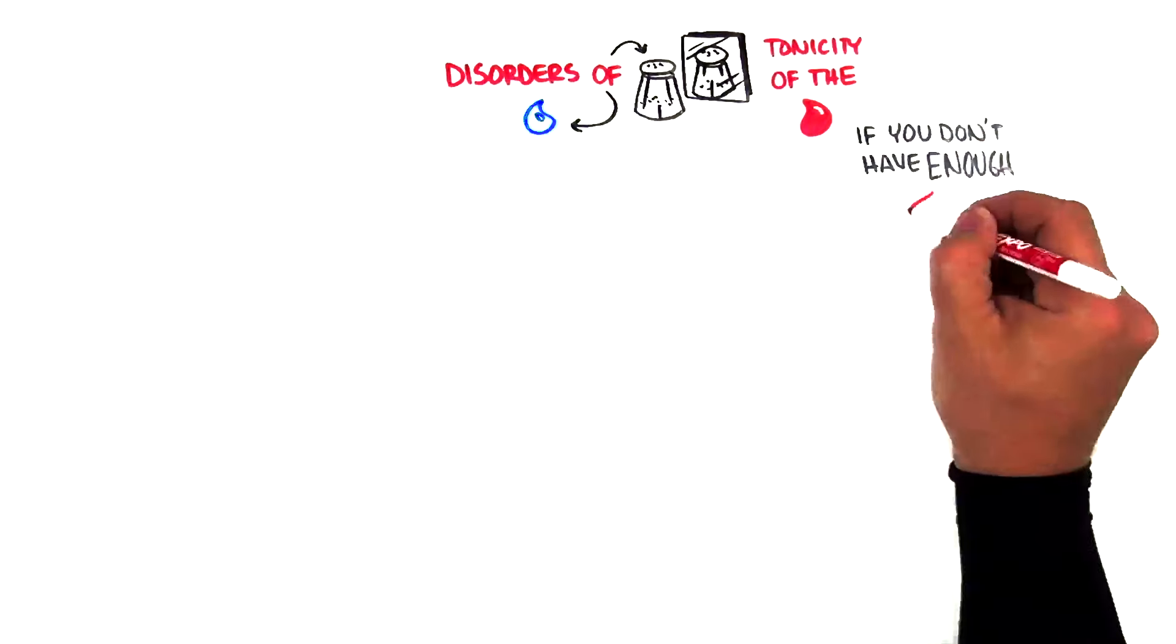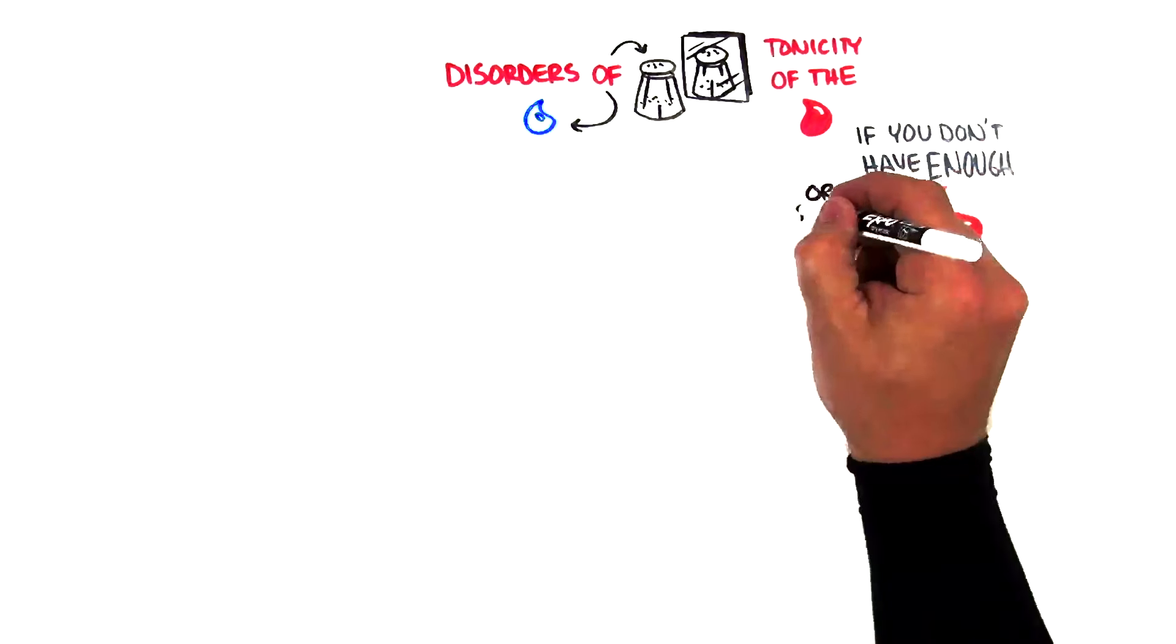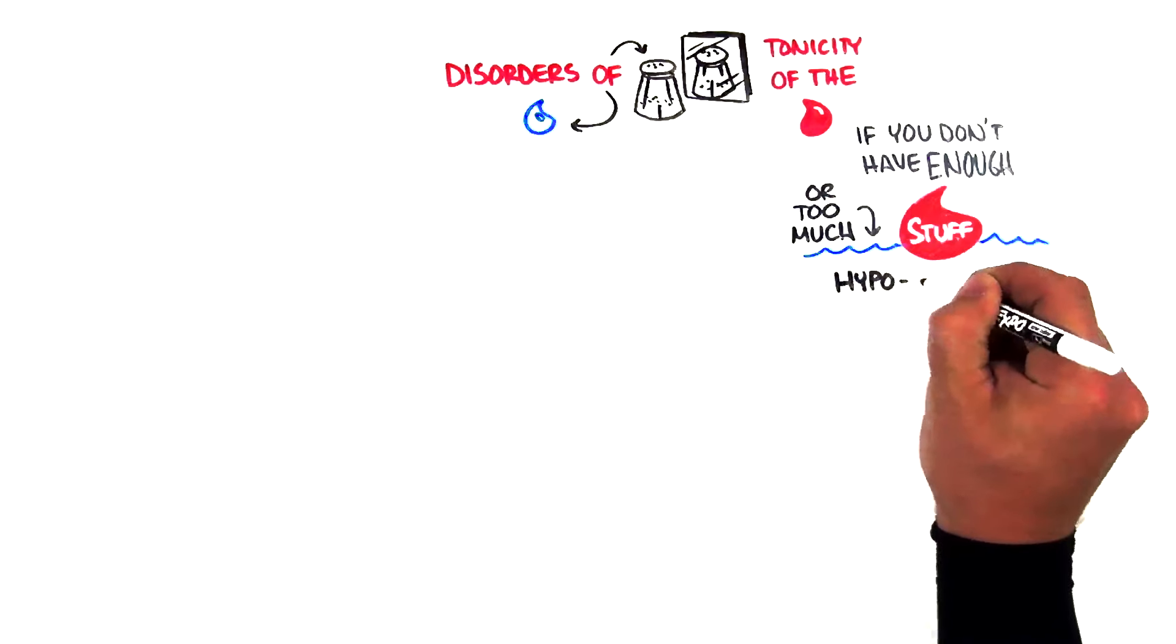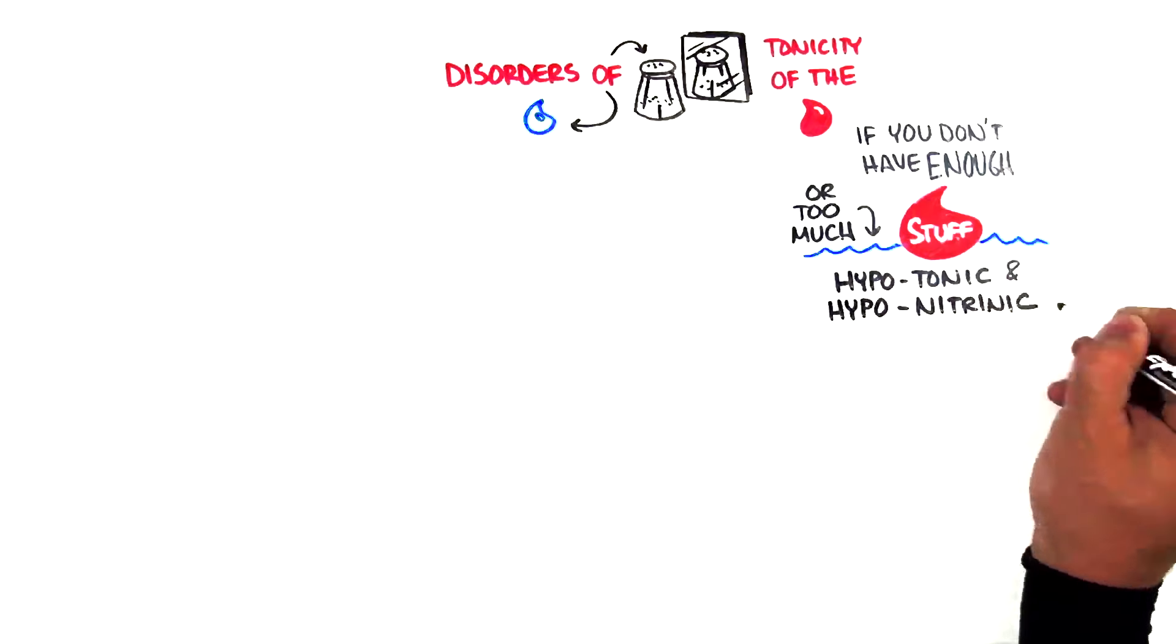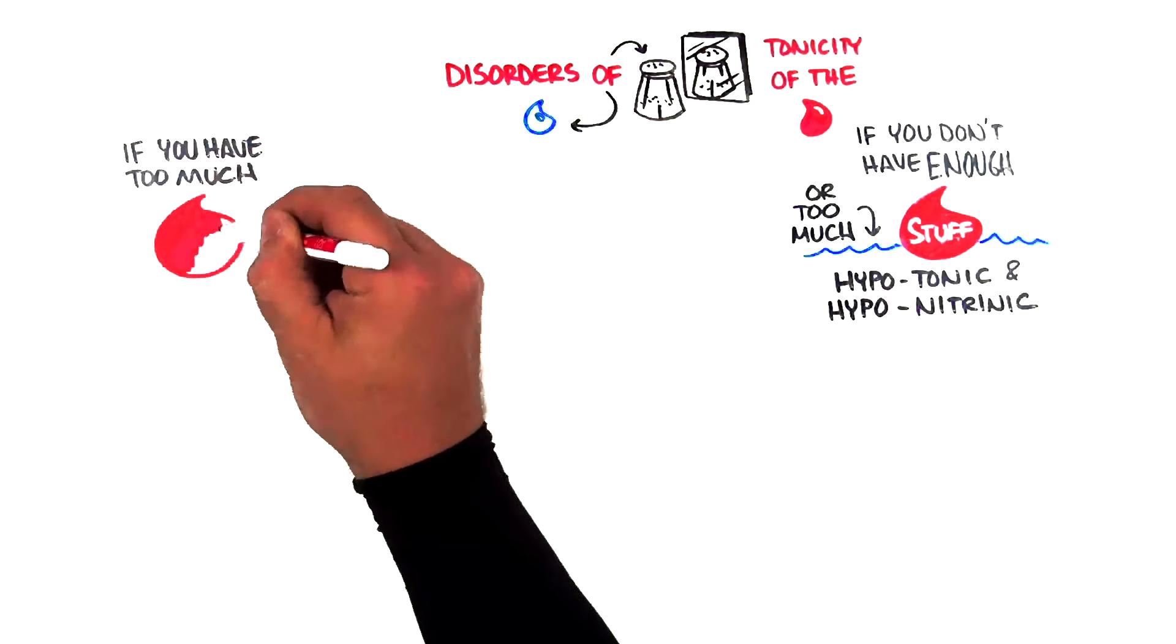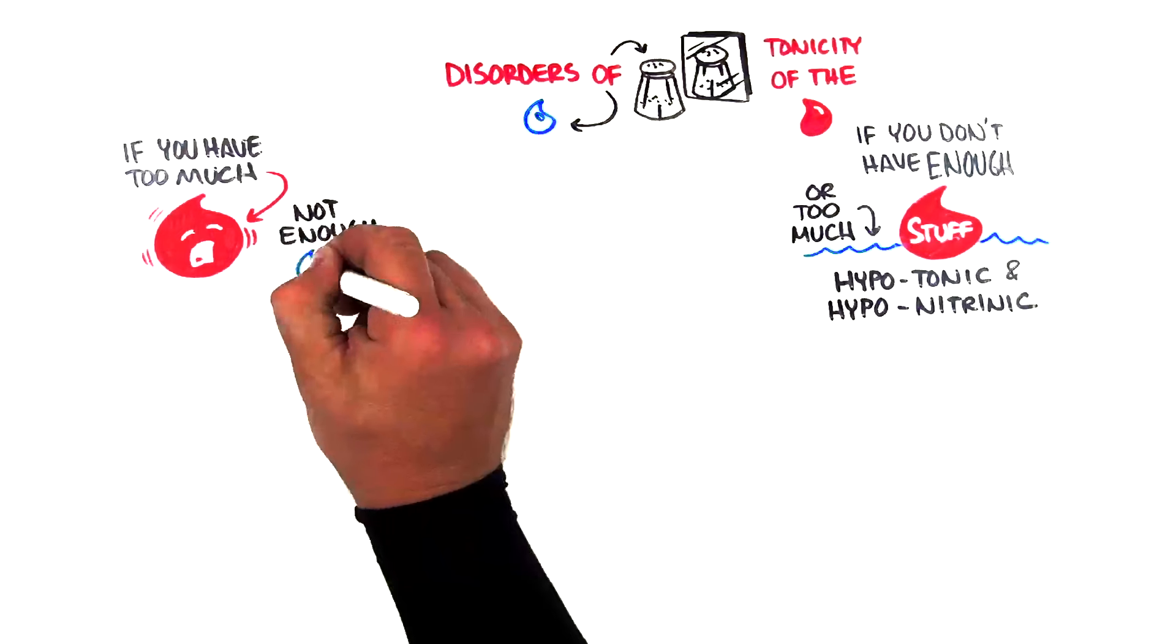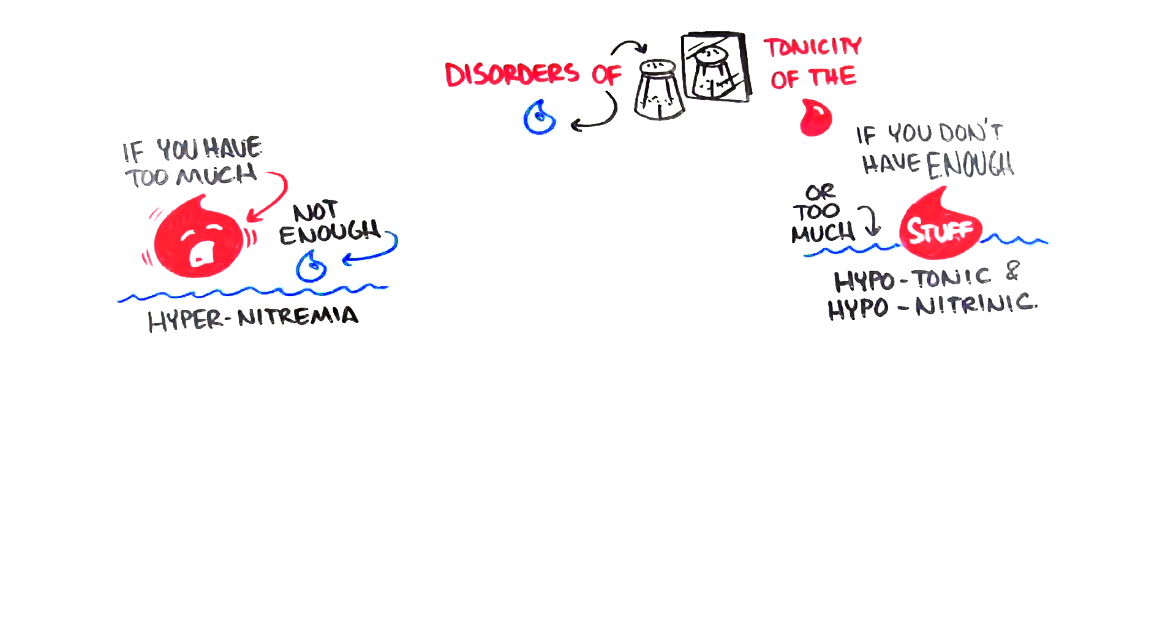So if you don't have enough stuff in the blood, or you have too much water, you'll be hypotonic and hyponatremic. Conversely, if you have too much stuff or not enough water, you're going to have hypernatremia.